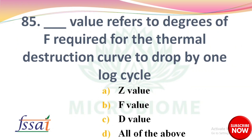DASH value refers to the degrees of Fahrenheit required for the thermal destruction curve to drop by one log cycle. Options: A) Z-value, B) F-value, C) D-value, D) All of the above. The right answer is option A: Z-value.